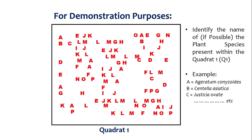Now, if possible, or if you have knowledge of the plant names, then identify the name of the different plant species that are present within Quadrat 1. For example, identify the name of Species A, the name of Species B, and similarly for the other species present within the quadrats.